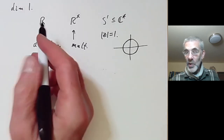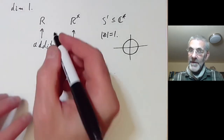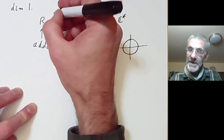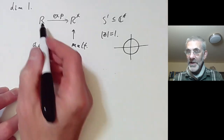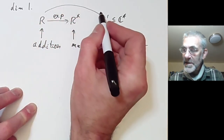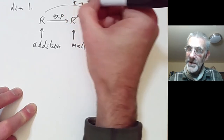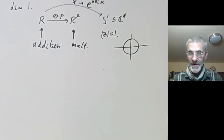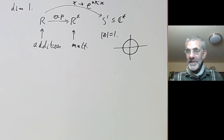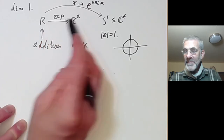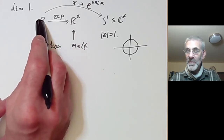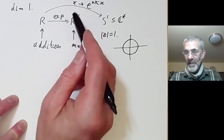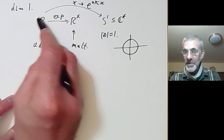These examples are all very closely related. There's a homomorphism of groups from R to the non-zero reals given by the exponential map, and there's a homomorphism from the reals to the circle group given by mapping x to e^(2πix). These are homomorphisms of groups, and the exponential map identifies the reals with the connected component of the non-zero reals, so the connected components of these two groups are the same.